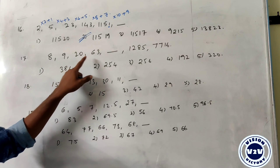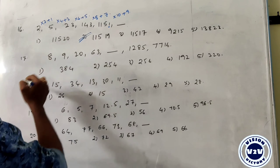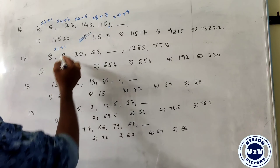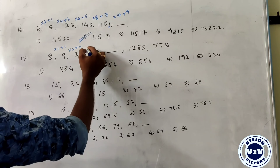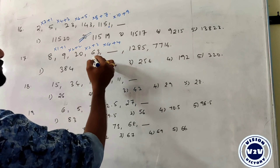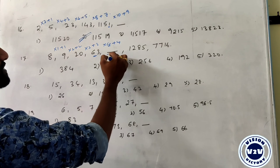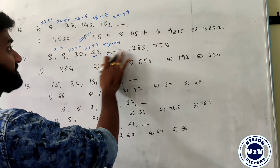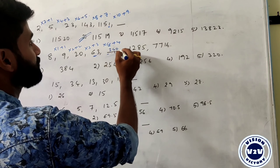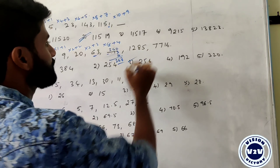Next: 8, 9, 20, 63. The pattern is: 8 times 1 plus 1 = 9, 9 times 2 plus 2 = 20, 20 times 3 plus 3 = 63. So next is 63 times 4 plus 4 = 256. The answer is 256.